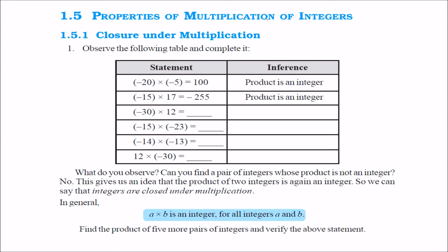Let us see the properties of multiplication of integers. First is that it is closed under multiplication. That is, whenever you multiply 2 integers, you will always get an integer. Take some example like minus 15 into minus 23. Minus minus is plus, and 23 into 15 — whatever you get, the value will be an integer only.